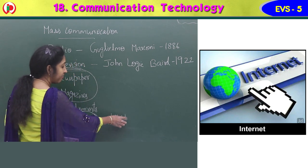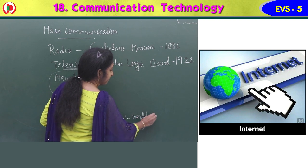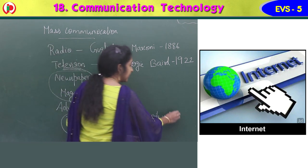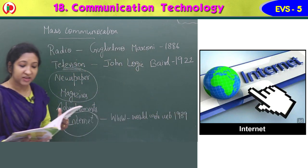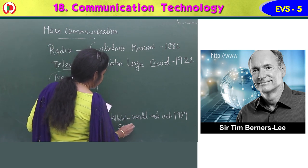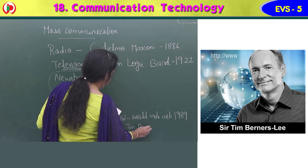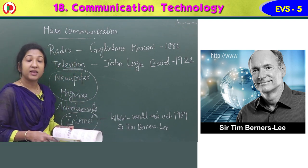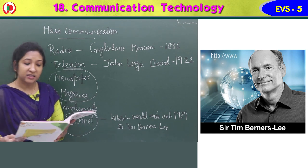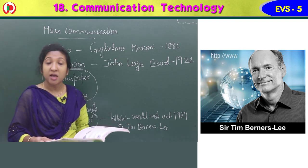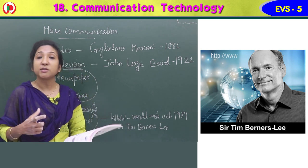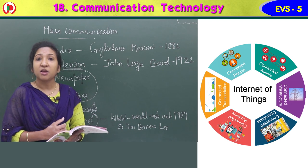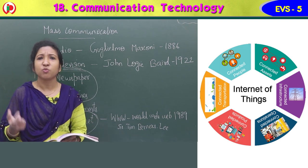The World Wide Web — www — was invented in 1989 by Sir Tim Berners-Lee. Nowadays internet is used for various purposes. People cannot live without internet nowadays. They use it for online shopping — they can sit at home and order whatever they need, whether household items, kitchen items, vegetables, or fruits.